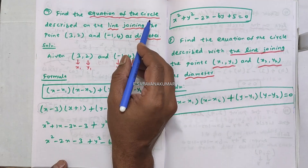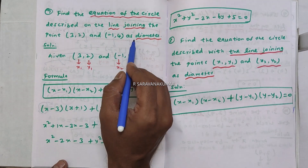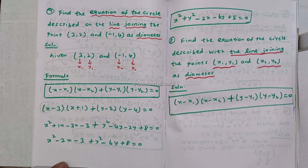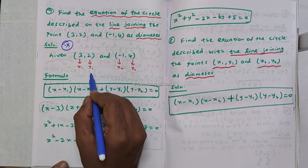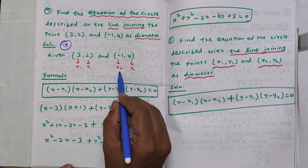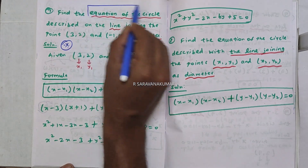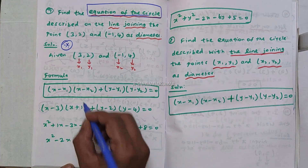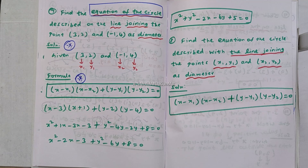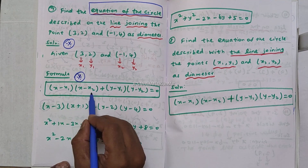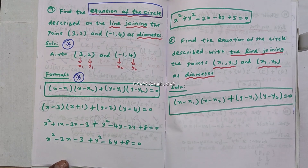Find the equation of the circle described with the line joining the points (3, 2) and (-1, 4) as diameter. The first point is (3, 2) — x1, y1 — and the second point is (-1, 4) — x2, y2. The equation of the circle with two-point diameter form: (x minus x1)(x minus x2) plus (y minus y1)(y minus y2) equal to zero.